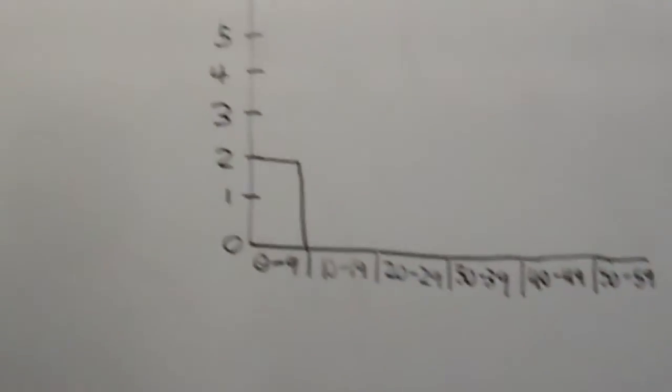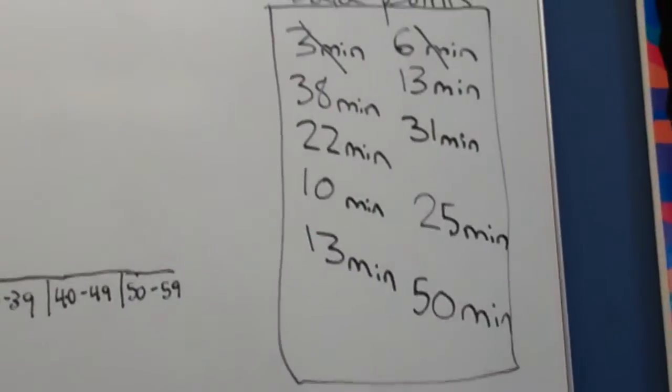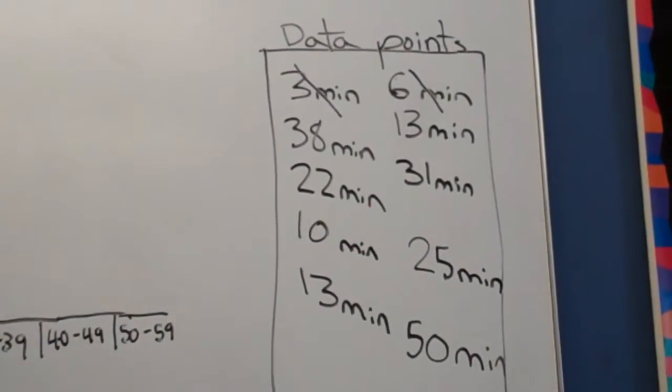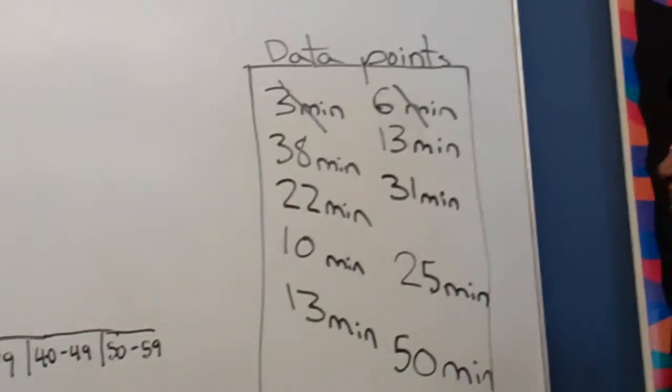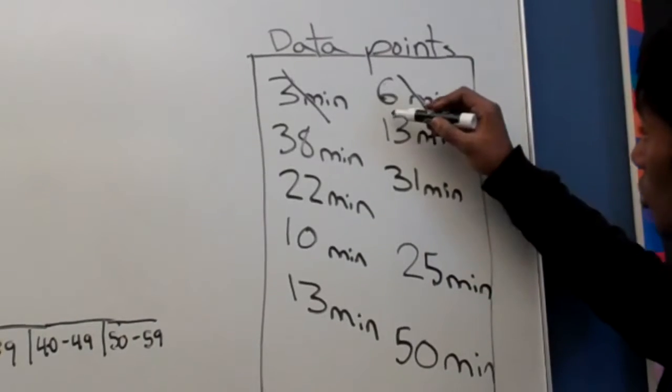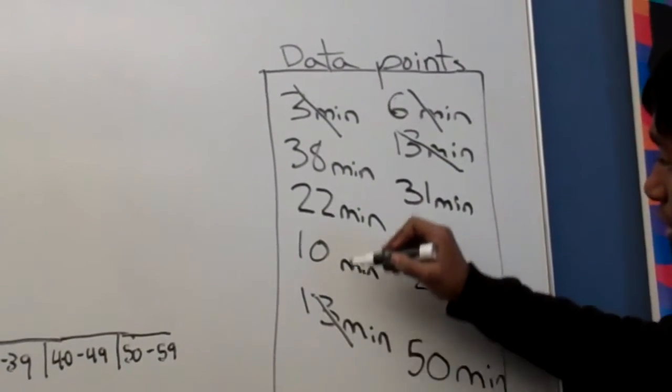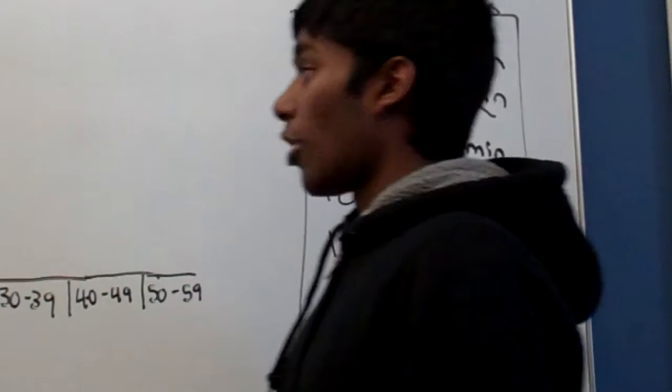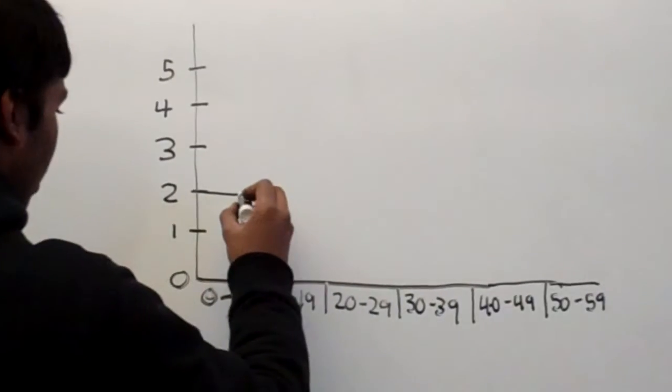The next category is ten to nineteen. And there are also, actually there are three people this time. There's two thirteen minute people and one ten minute person. So this bar goes to three.